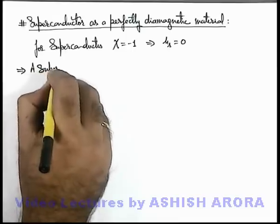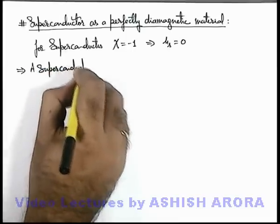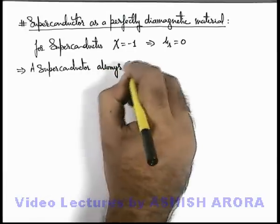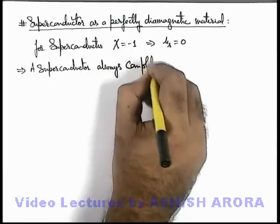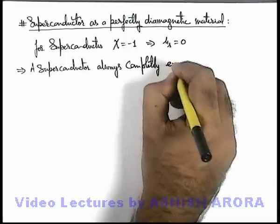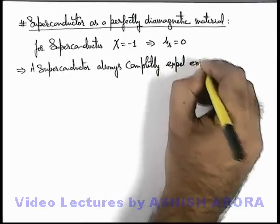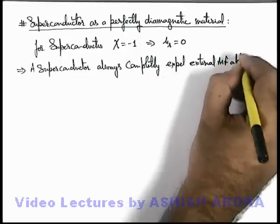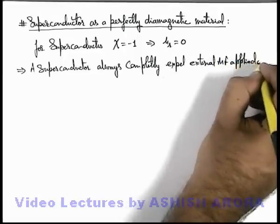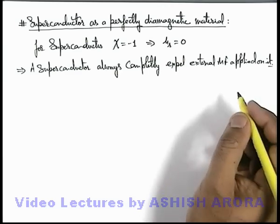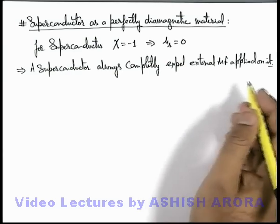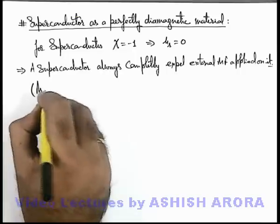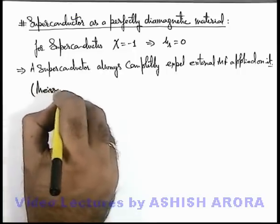always completely expels external magnetic field applied on it. This is a phenomenon whose explanation is beyond the scope of these lectures, which is studied as Meissner's effect.